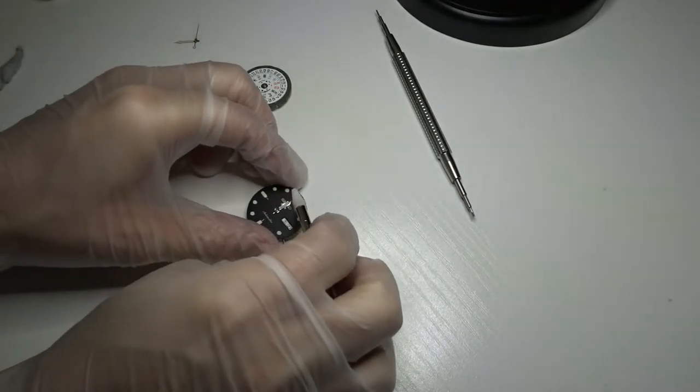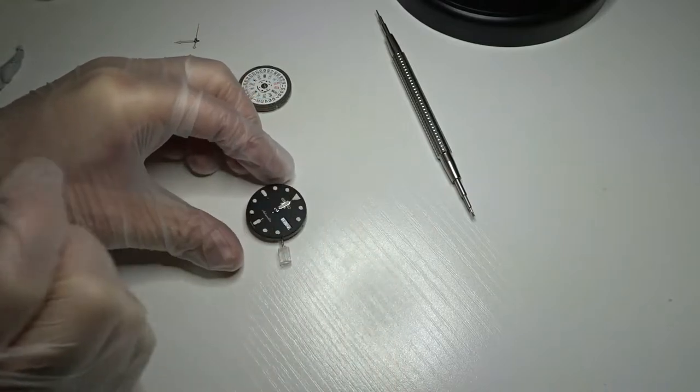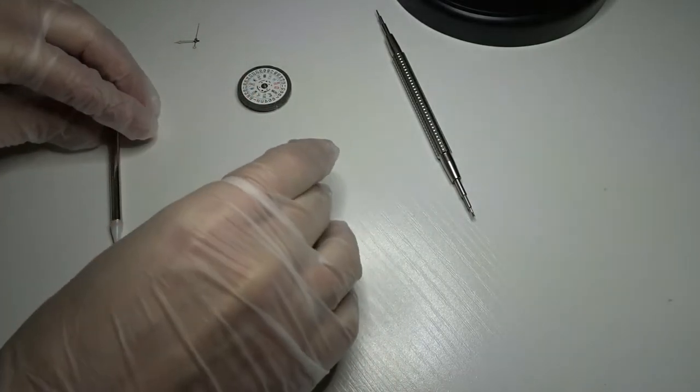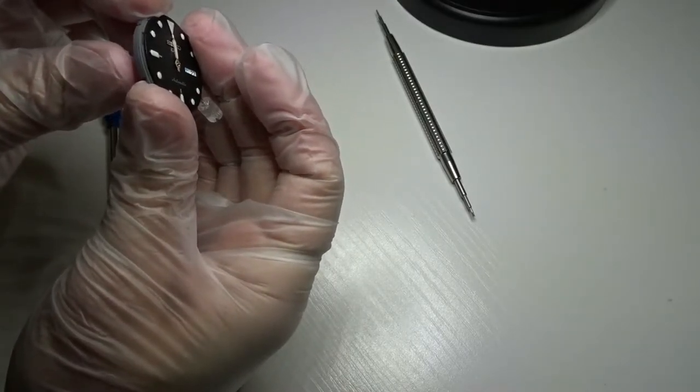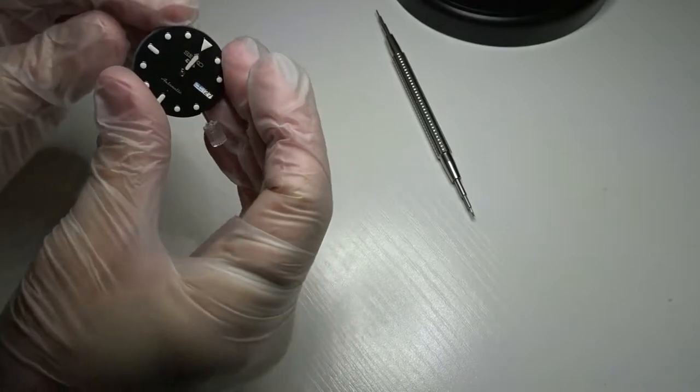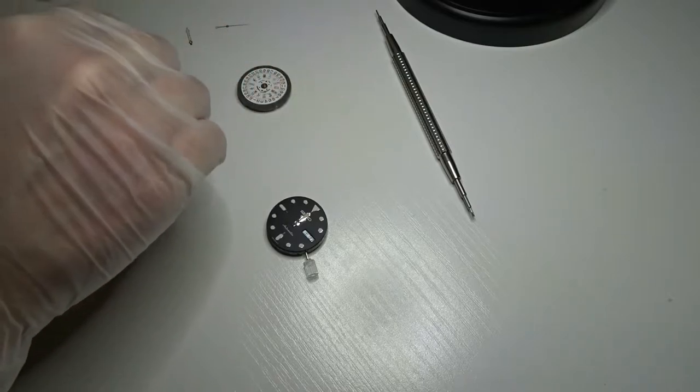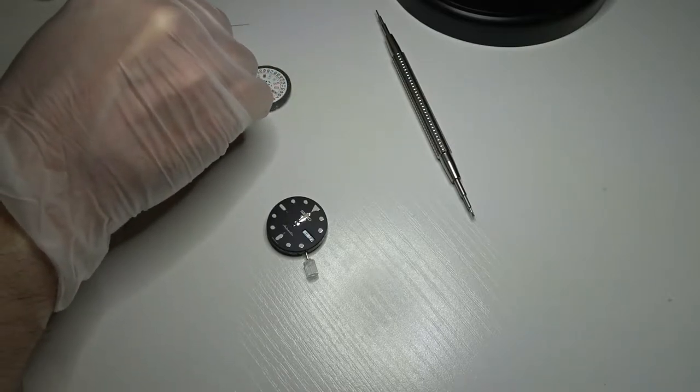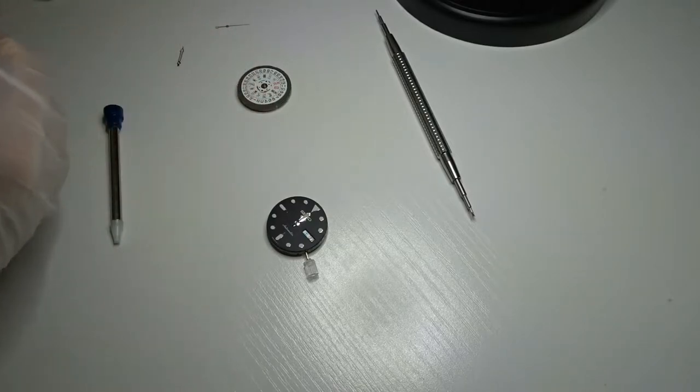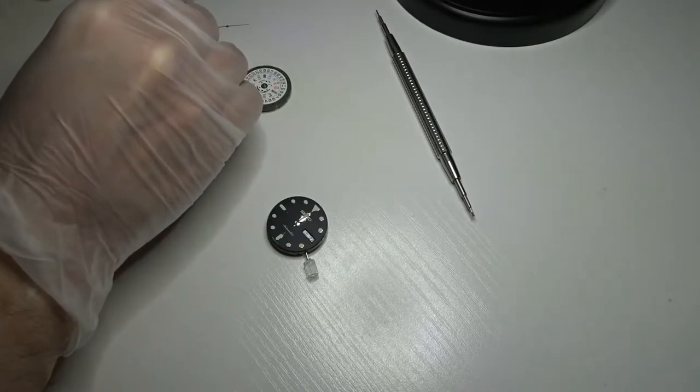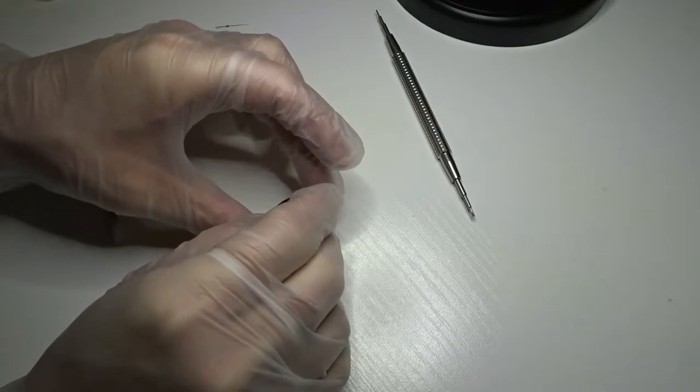Oh, one thing you might want to do though is after you apply each hand, you might want to turn the movement so you can make sure that the clearance is fine. Take a look at it, make sure it's level. Sometimes it doesn't get seated properly even though it looks like it is, and you can tell because if you turn the hands you'll see that they start spinning, so that means they're not seated properly.